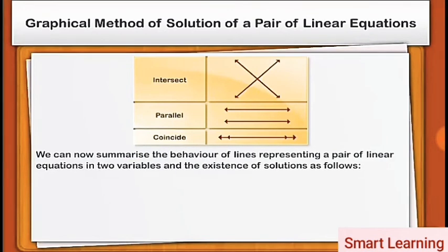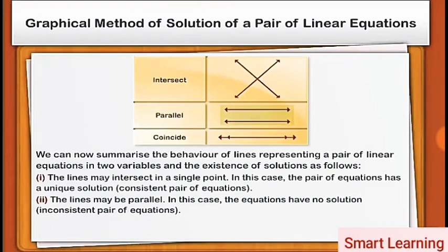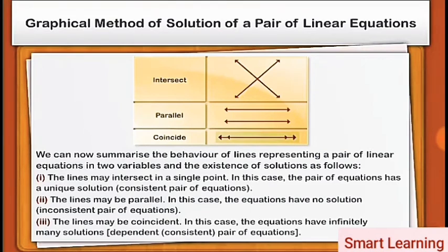We can now summarize the behavior of lines representing a pair of linear equations in two variables and the existence of solutions as follows. First, the lines may intersect at a single point — in this case, the pair of equations has a unique solution: consistent pair of equations. Second, the lines may be parallel — in this case, the equations have no solution: inconsistent pair of equations. Third, the lines may be coincident — in this case, the equations have infinitely many solutions: dependent, consistent pair of equations.